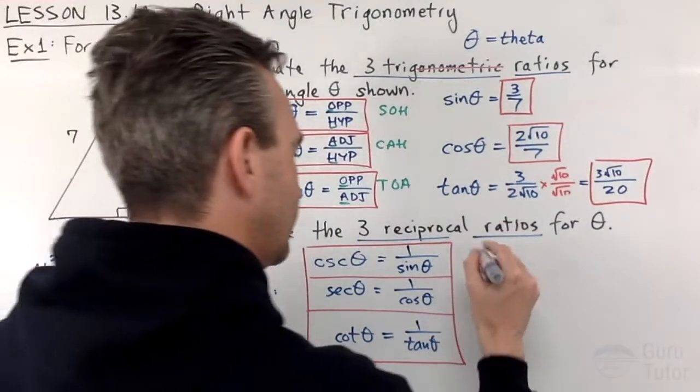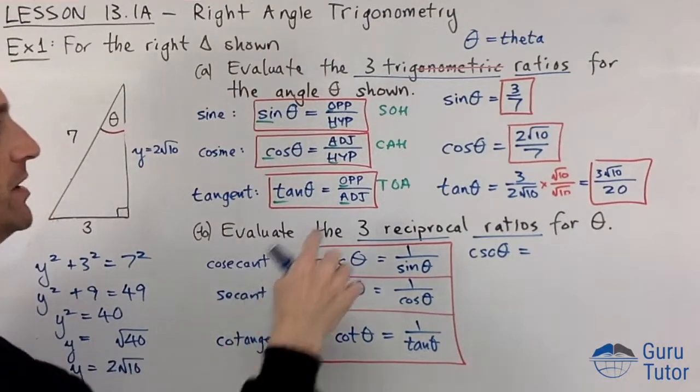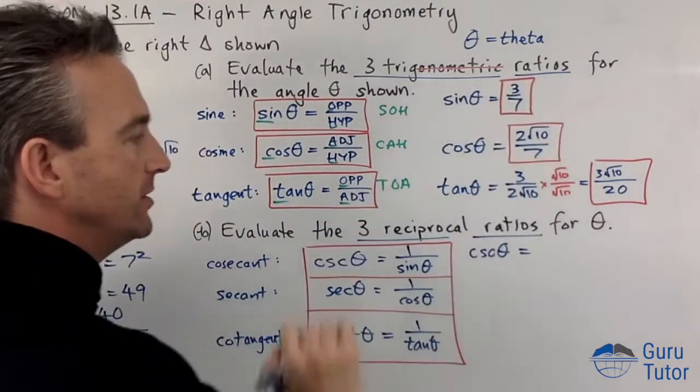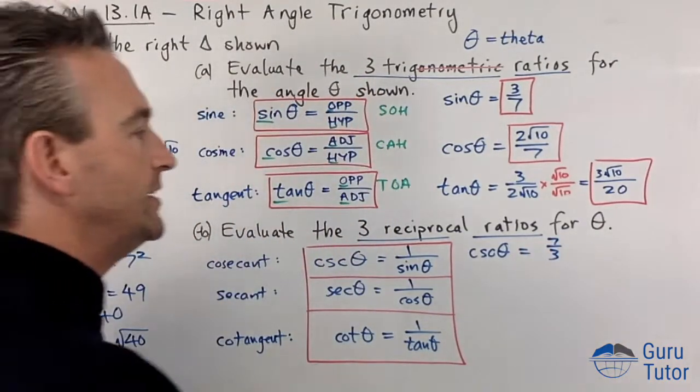Cosec theta is 1 over sine, so where's sine theta? Sine theta is 3 over 7, so what's the reciprocal of that? That is 7 over 3. Pretty easy.